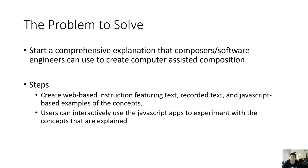To start a comprehensive explanation that composers and software engineers can use to create computer-assisted composition. Sometimes, like me, they're the same — I write music but I'm also a software engineer. I'm actually targeting that very thin sliver of people who are in both music composition and software engineering. The problem we're trying to solve is to bring this system of musical composition to an easily understandable and therefore usable system — to create web-based instruction that features text, recorded text, and JavaScript-based examples of the concepts. We'll take the book text, embed it, record it so people can listen to it, and then have interactive JavaScript examples that illustrate the concepts, making it so much easier for people to understand what he's talking about.